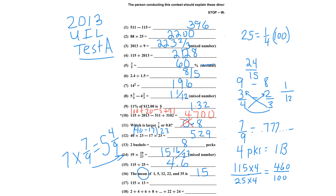Number 17: 13 times 15 is 195, carry the 1, 13 plus 1 is 14, so 1495. Another way students do this is 115 times 13: 13 times 5 is 15, write a 5 and carry 1. 13 times 1 is 13 plus the carry gives 14. And 13 times 1 is 13 plus the carry of 1 is 14. So the answer is 1495.